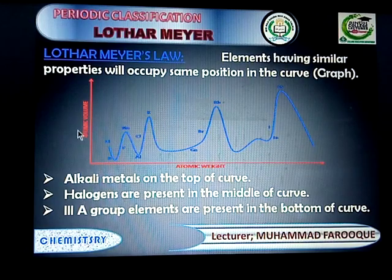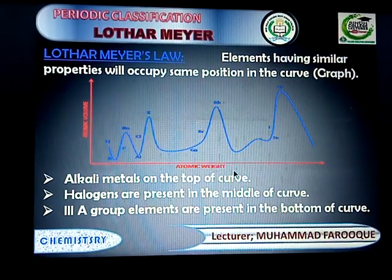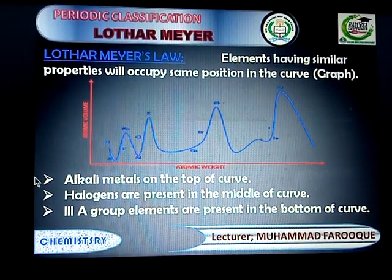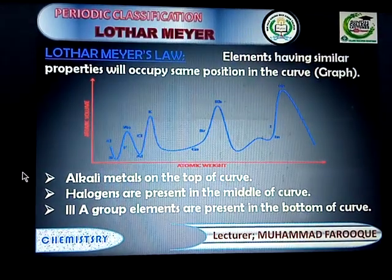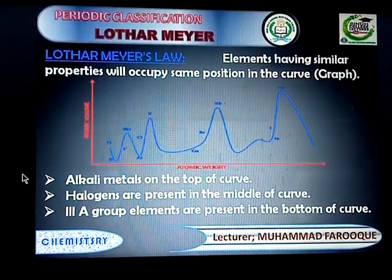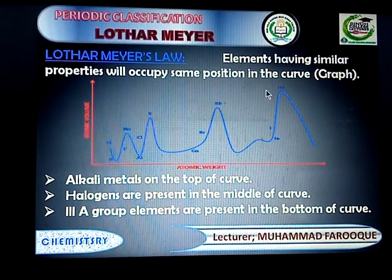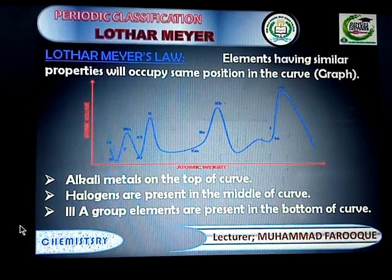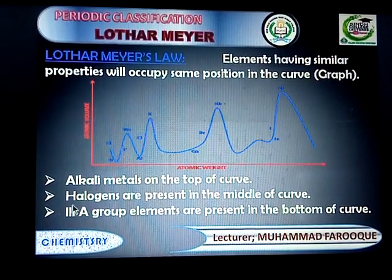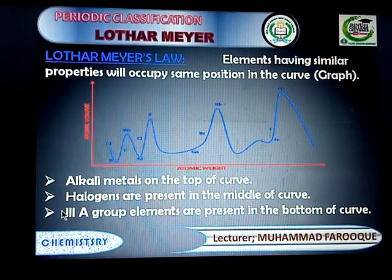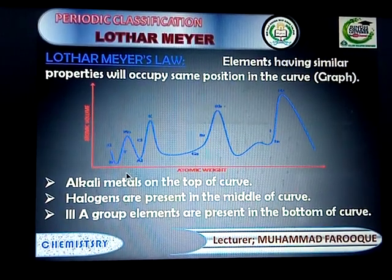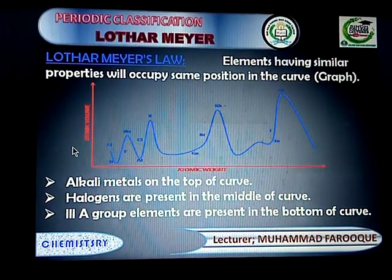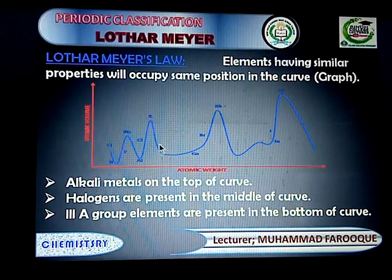Now, if we look at the graph shown on your screen: alkali metals — lithium, sodium, potassium, rubidium, and cesium — are present at the top of the curve, so they have the same properties. In the same way, halogens — fluorine, chlorine, bromine, and iodine — are present in the middle of the graph or curve, so they also have the same properties.